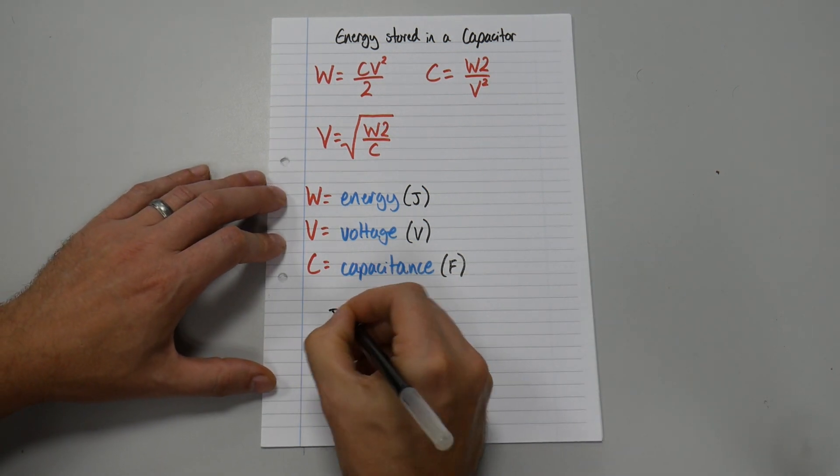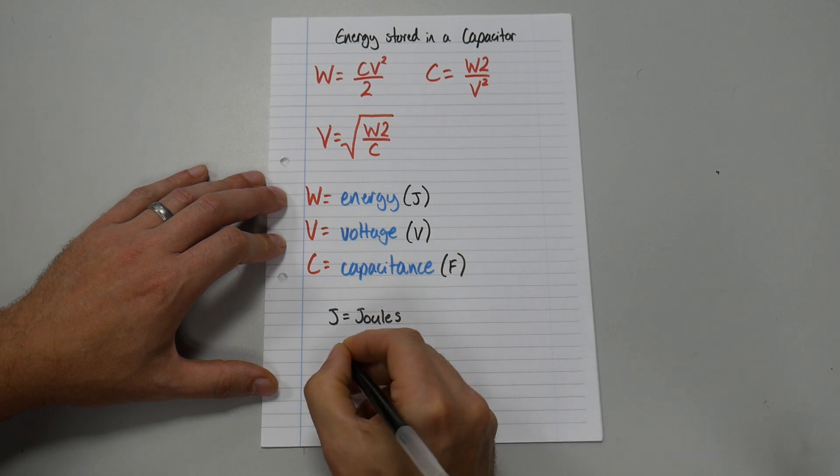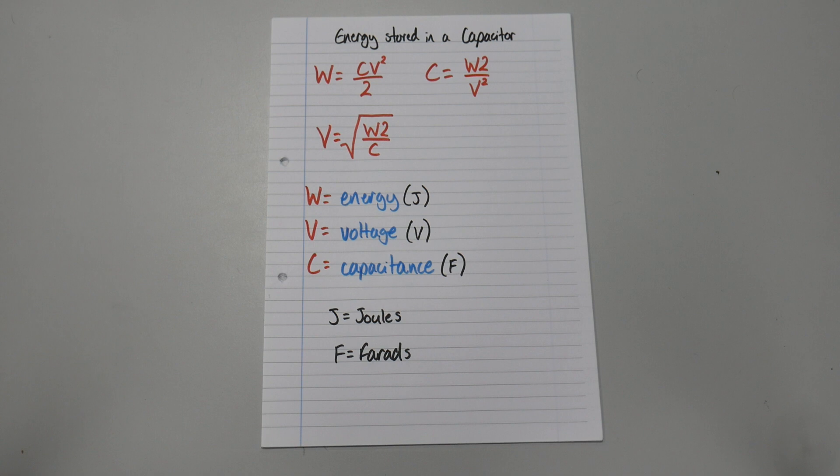So if we're unsure about those, make ourselves another little note. So J equals joules. And capital F equals farads. There we go.